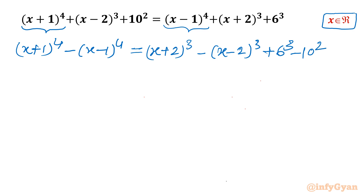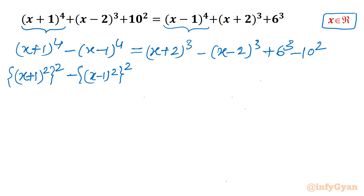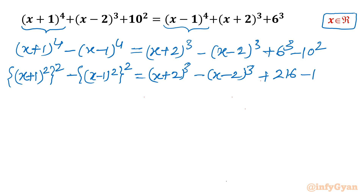Now I will use the exponent property. I can write (x+1)⁴ as [(x+1)²]² and similarly (x-1)⁴ as [(x-1)²]² using exponent law. On the right hand side we write (x+2)³ minus (x-2)³. And 6³ is 216, 10² is 100.